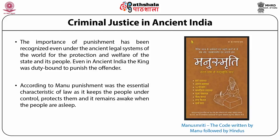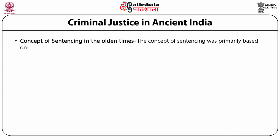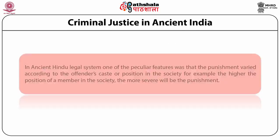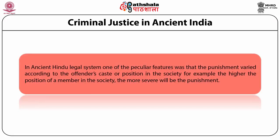Today, how do we define what a crime is? We have parliament. In ancient India, you had things like the Laws of Manu — religious scriptures that would give content to justice. Now, the content of justice is determined by deliberative procedures in parliament. In the olden times, in ancient India, the concept of sentencing was primarily based on the situation of the crime, the causation — what caused that individual to commit the crime — and also the character and status of the offender in society. In ancient India, what you had was the caste system — the punishment varied according to the offender's caste or position in society. The higher the position of a member in society, the more severe the punishment was. Obviously, in a modern democratic society, this is not permissible.